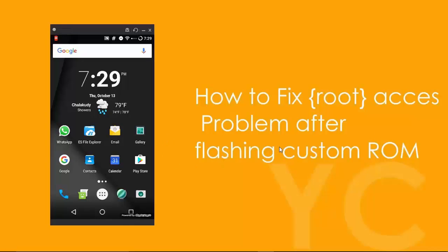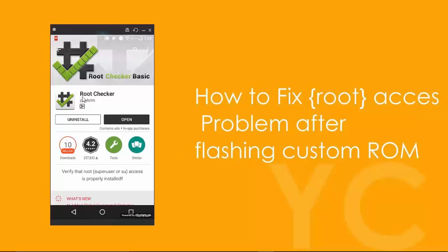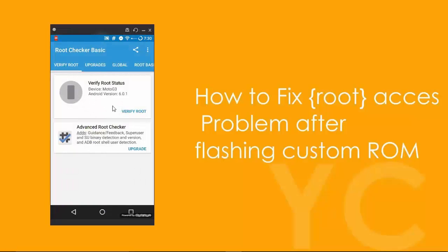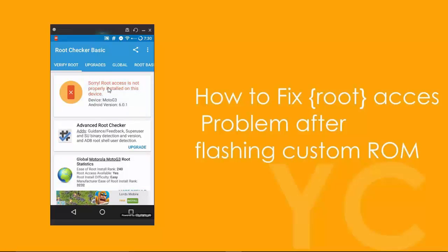First, go to the Play Store and install the Root Checker app — it's free. Once installed, open it. At the bottom you can see 'Verify Root.' Click on it and it tells you your device is not rooted. We can see the message: 'Root access is not properly installed on your device.' So we're going to fix this.